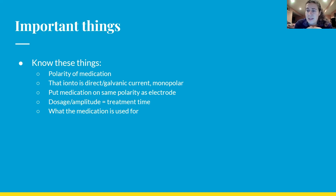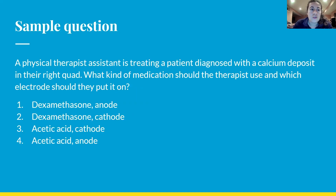The boards get a little less picky about ionto, so just stick with what's been covered, but be careful because it is electricity. Sample question: a physical therapist assistant is treating a patient diagnosed with a calcium deposit in their right quad. What kind of medication should the therapist use and which electrode should they put it on? One, dexamethasone, anode. Two, dexamethasone, cathode. Three, acetic acid, cathode. Or four, acetic acid, anode.